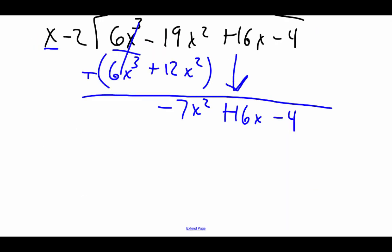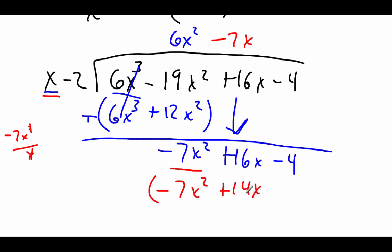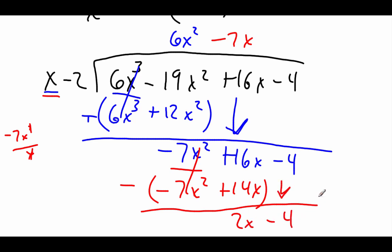Now we start all over again, focusing on negative 7x squared and our x. What happens if we take negative 7x squared divided by x? One of those x's cancels, so we get negative 7x. Now if we take negative 7x times x minus 2: negative 7x times x gives us negative 7x squared, and negative 7x times negative 2 gives us plus 14x. We subtract: negative 7x squared minus negative 7x squared cancels. Then 16x minus 14x gives us 2x, and carry down the minus 4.